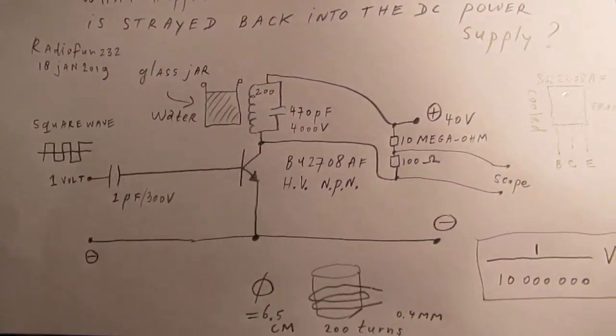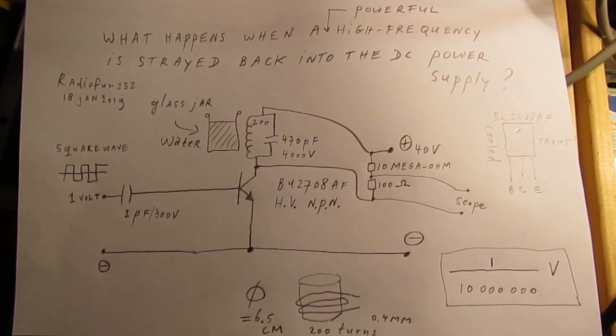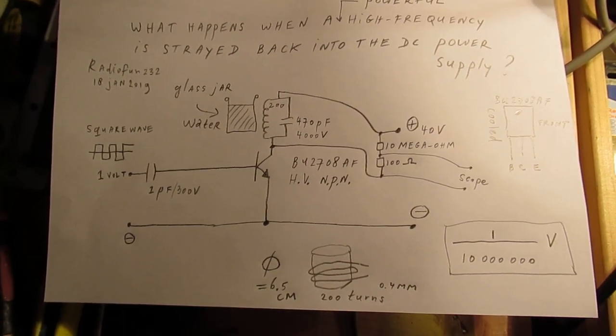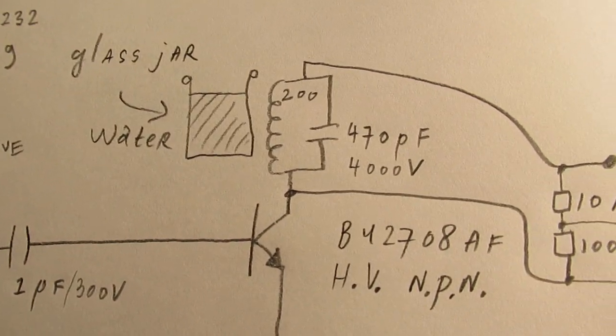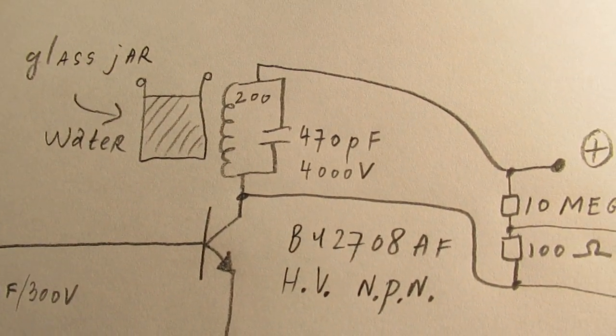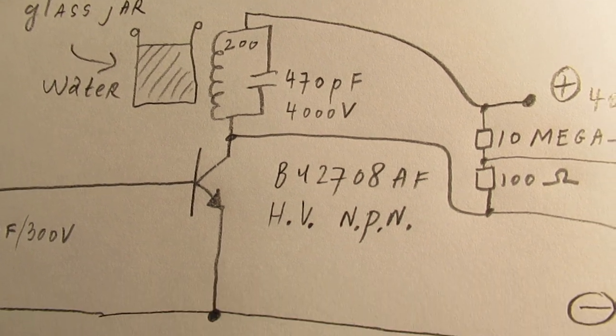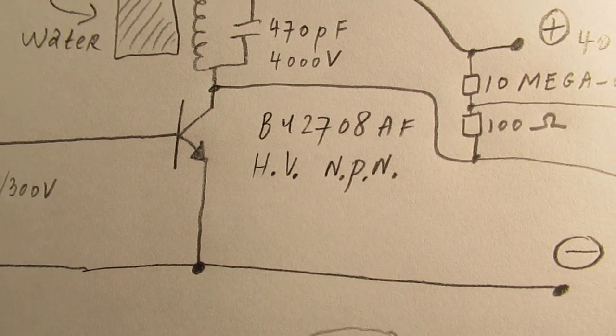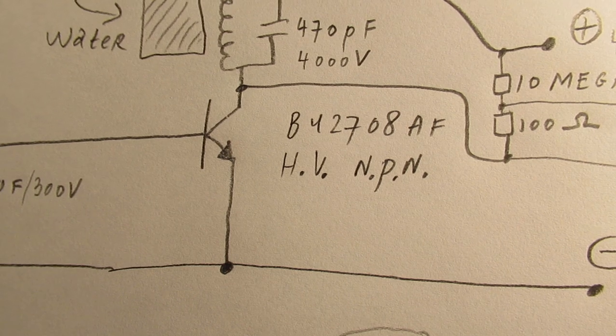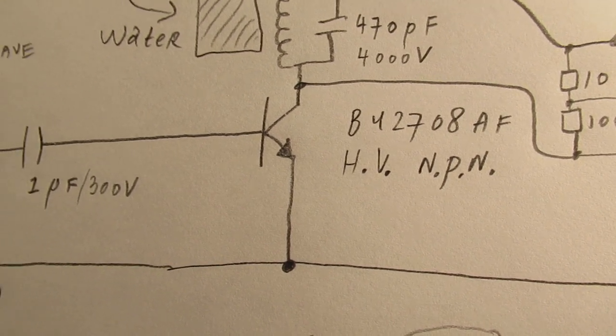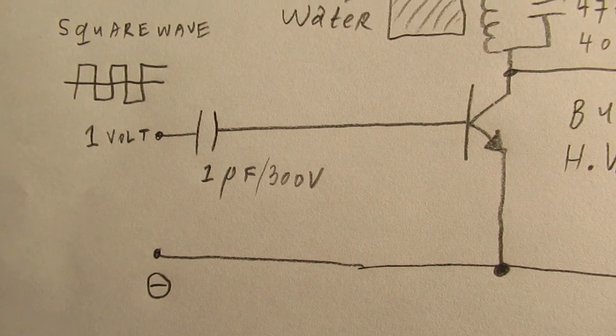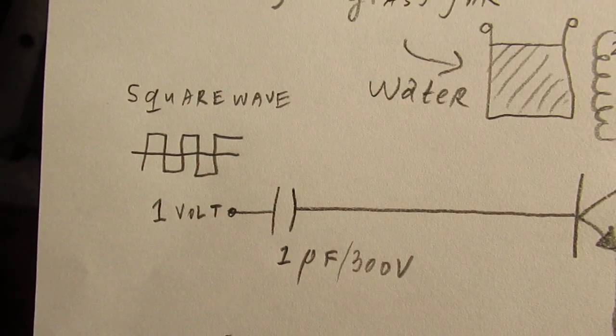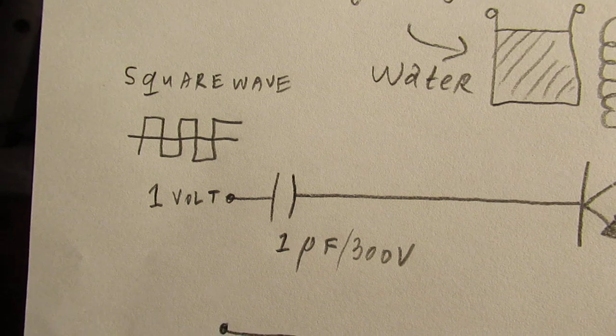And by the way, this is the schematic. The glass jar, the tank circuit is 200 windings, 470 picofarad capacitor, the typical high voltage NPN transistor that can handle a lot of voltage and high current, driven via a one microfarad capacitor connected to the square wave oscillator that gives out one volt.